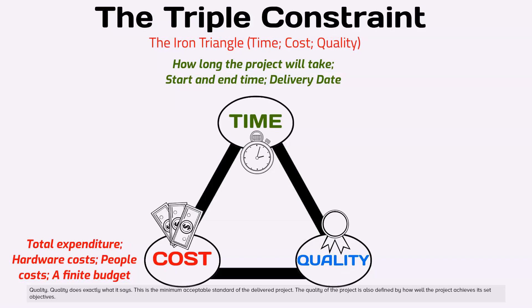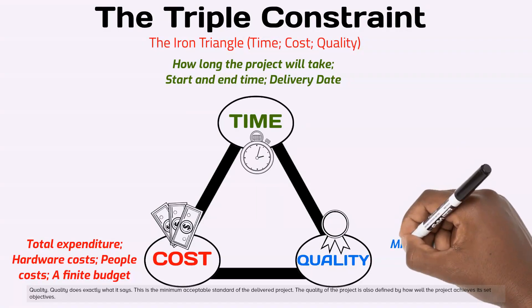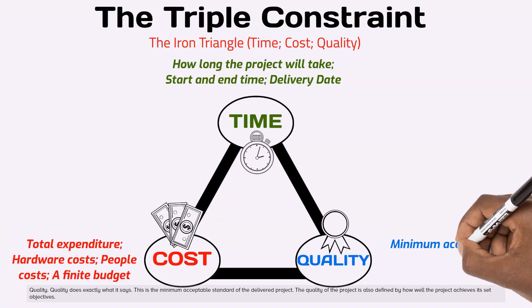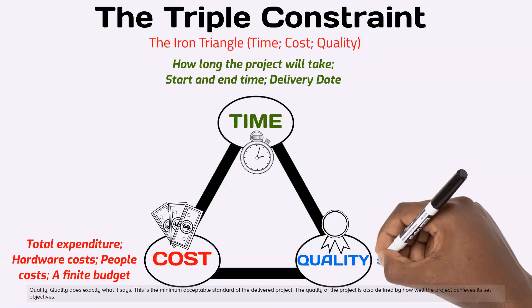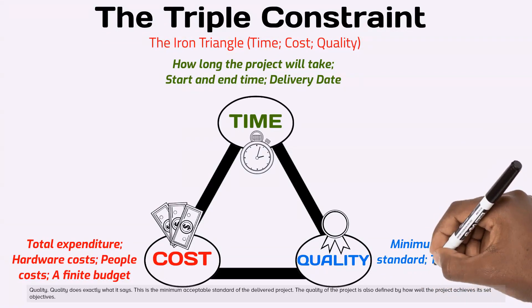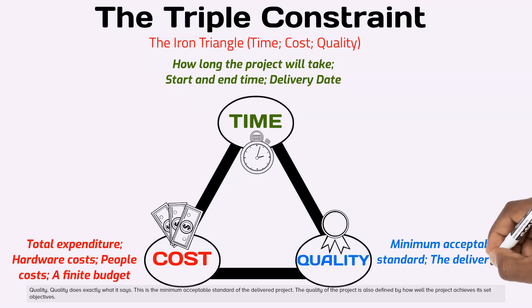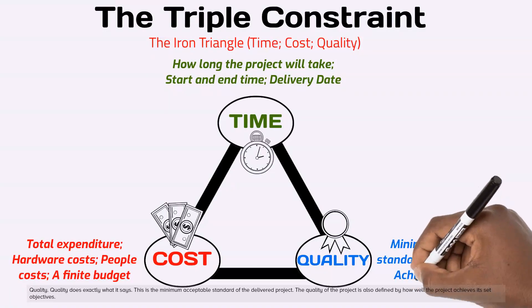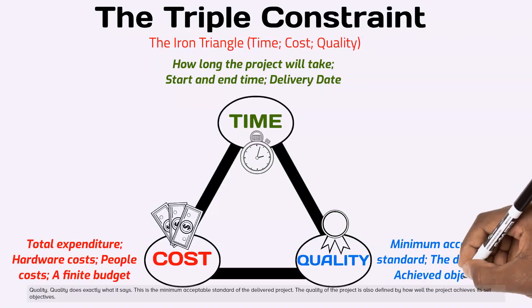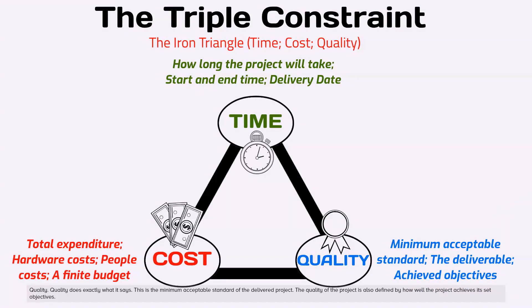Quality. Quality does exactly what it says. This is the minimum acceptable standard of the delivered project. The quality of the project is also defined by how well the project achieves its set objectives.